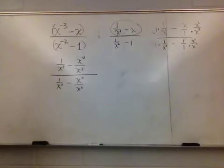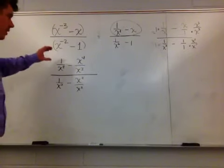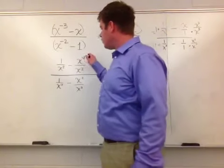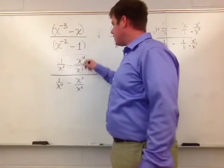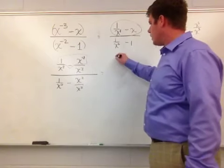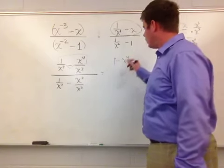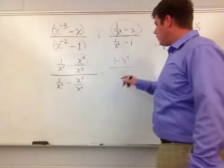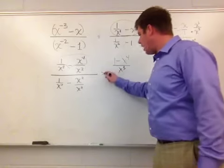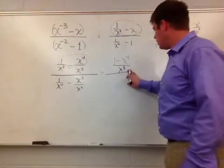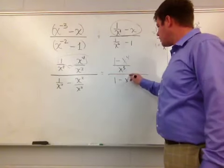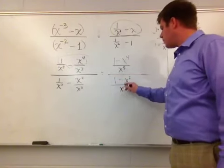So now I can begin to simplify this part. I can write this expression as 1 minus x to the 4th all over x cubed, as opposed to leaving them separate. So I get 1 minus x to the 4th all over x cubed. And that entire quantity is going to be divided by 1 minus x squared all over the quantity of x squared.